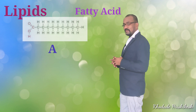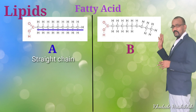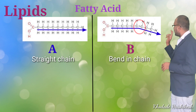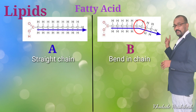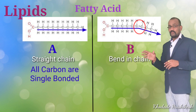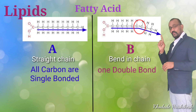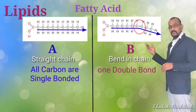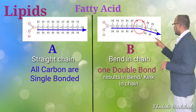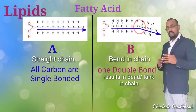Here is an example: fatty acid type A and fatty acid type B — what is the difference? Fatty acid A is straight in form, but fatty acid B is bent at a certain location. The bend occurs between carbons 7 and 8. If you look at fatty acid A, all carbons are bonded by single bonds only, whereas in fatty acid B, there is a double bond between the seventh and eighth carbon. That double bond is responsible for causing the bend or kink in the fatty acid chain. One double bond can cause one bend; the number of double bonds may vary.